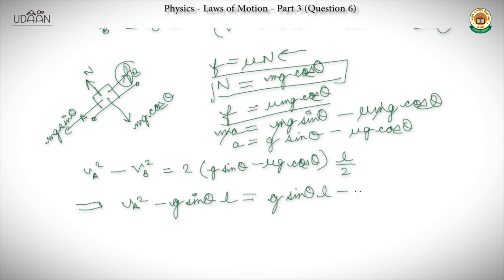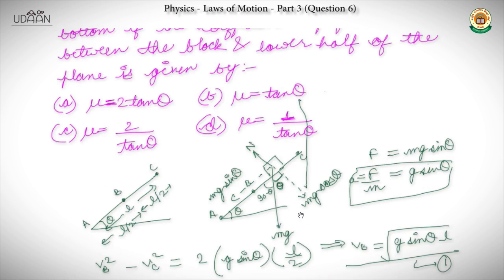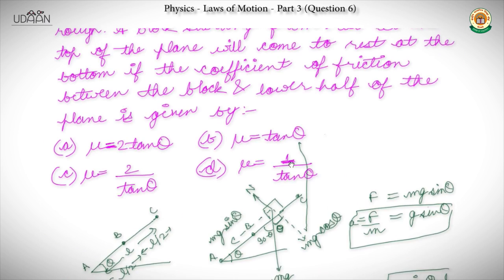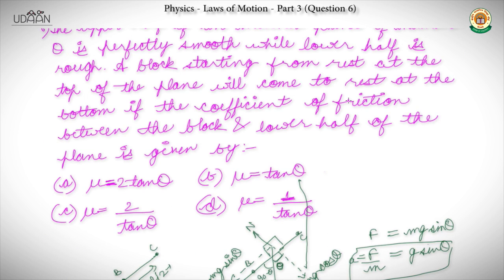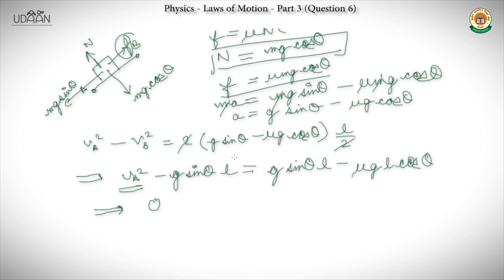We know Va is zero because the block starts from rest and comes to rest at the bottom. So friction is decelerating the block such that its velocity, which was √(g·sin θ·L) at B, comes down to zero. We have: 0 − g·sin θ·L = g·sin θ·L − μ·g·L·cos θ, which gives 2g·sin θ·L = μ·g·L·cos θ.